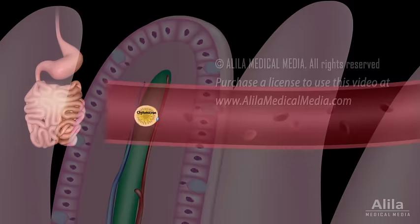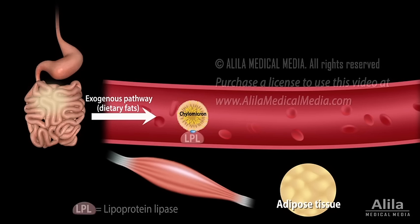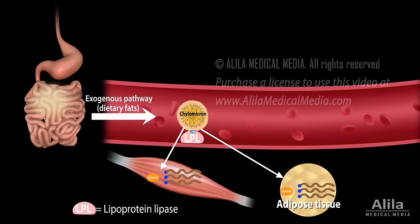The walls of blood capillaries have a surface enzyme called lipoprotein lipase. This enzyme hydrolyzes triglycerides into fatty acids and glycerol, enabling them to pass through the capillary wall into tissues, where they are oxidized for energy or re-esterified for storage.